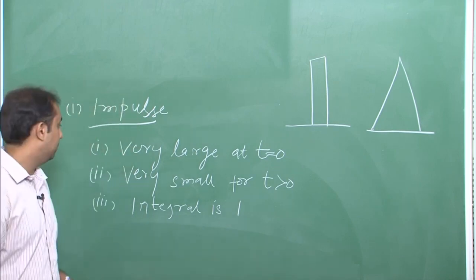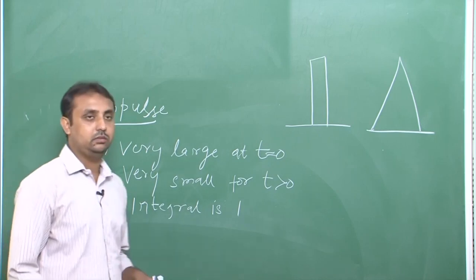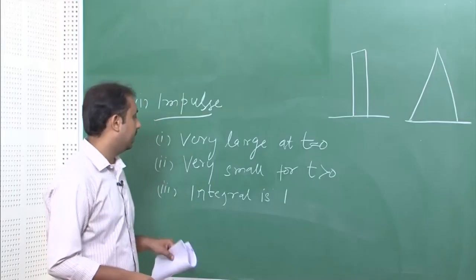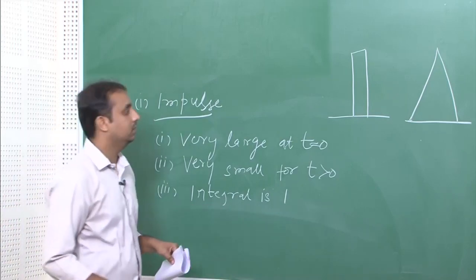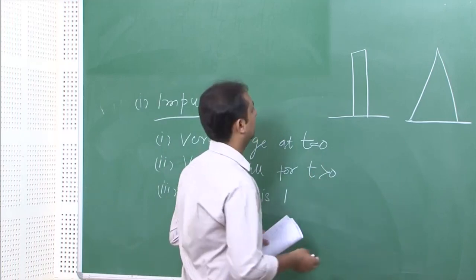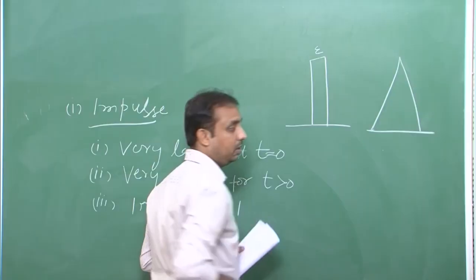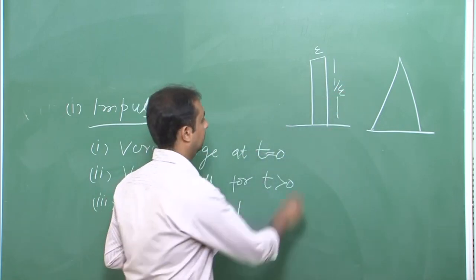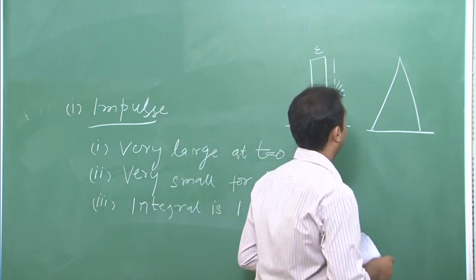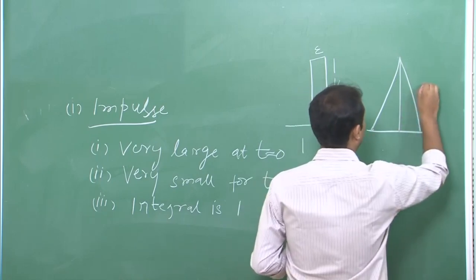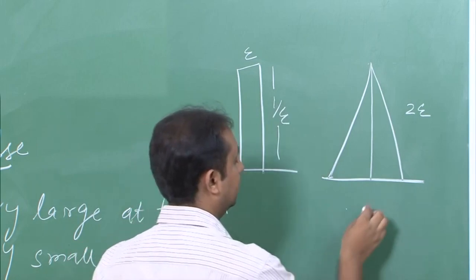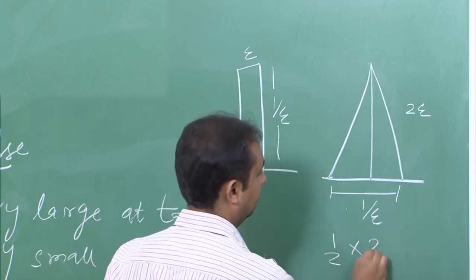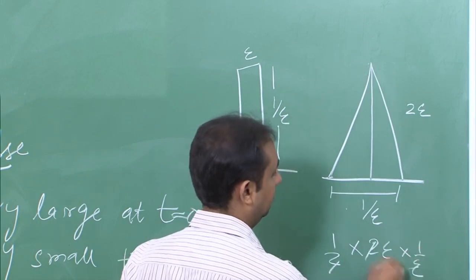Practically, a signal with very large magnitude is impossible. So we assume a signal of short duration having an area of unity — that is, integral equals 1. For example, assuming a rectangular signal, its duration will be zeta and its amplitude is 1/zeta, so overall area is 1. Or for a triangular signal, amplitude will be 2/zeta and duration 1/zeta, giving area equal to half times 2/zeta times 1/zeta, which equals 1.